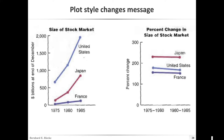Here's an example of identical data plotted in two different ways: the absolute size of the stock market versus the percentage change. This is the same with COVID-19 case numbers — the total number of cases makes the US look highest, but if you look at the percentage then other countries like Italy and Spain were actually doing a lot worse. Percentages are always more honest than just absolute values.